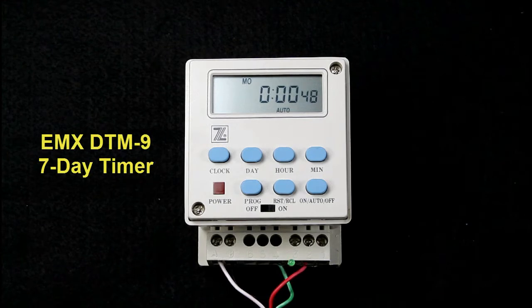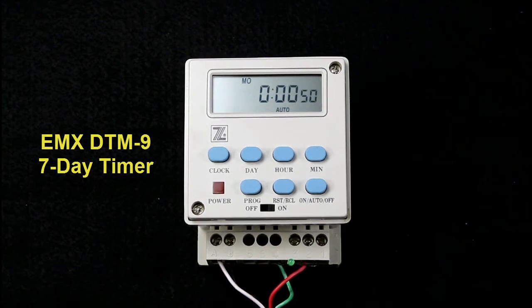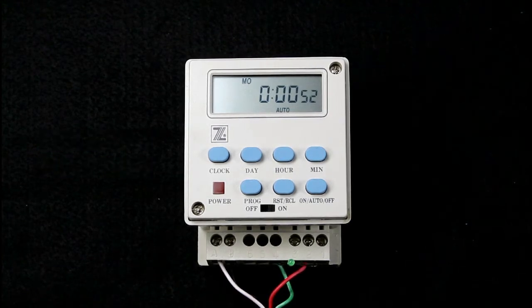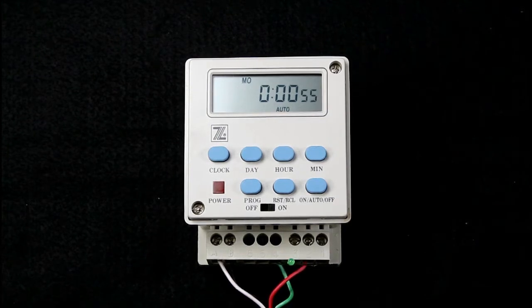This is an EMX DTM-9 7-day timer. We'll first go over the general functions, and afterwards we'll program an example into the timer.